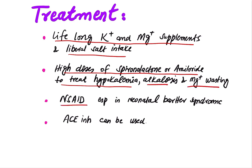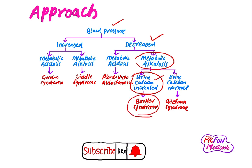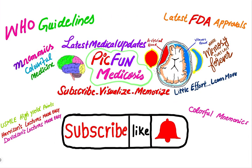NSAIDs such as indomethacin are used, especially in neonatal Bartter syndrome. ACE inhibitors can also be used. For diagnosis, first check blood pressure — if it is low or decreased, check the pH. If there is metabolic alkalosis, check urinary calcium. If it is increased, that confirms the diagnosis of Bartter syndrome. Thanks for watching. Please subscribe to my channel for latest WHO guidelines, latest FDA approvals, and latest medical updates.